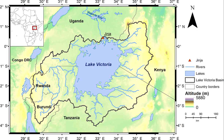However, the exact tributary remains undetermined, and which rises either in Rwanda or Burundi. The upper Nile is generally known as the Victoria Nile until it reaches Lake Albert, although it is part of the same river system known as the White Nile. This name strictly speaking only applies after the river crosses the Ugandan border into South Sudan.